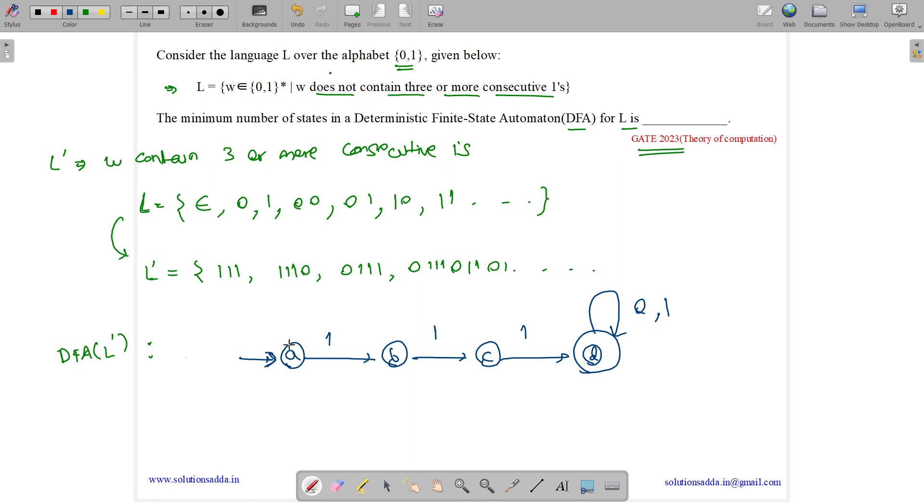Now, what happens on a 0? We loop on state A. Suppose we've seen 11 and now we have a 0. Have we made any progress? No, because we need to check for 3 consecutive ones again. So the progress is 0 and we come back to the initial state. Similarly, from state B or C, if we encounter a 0, we come back to state A. This is the DFA for L complement.